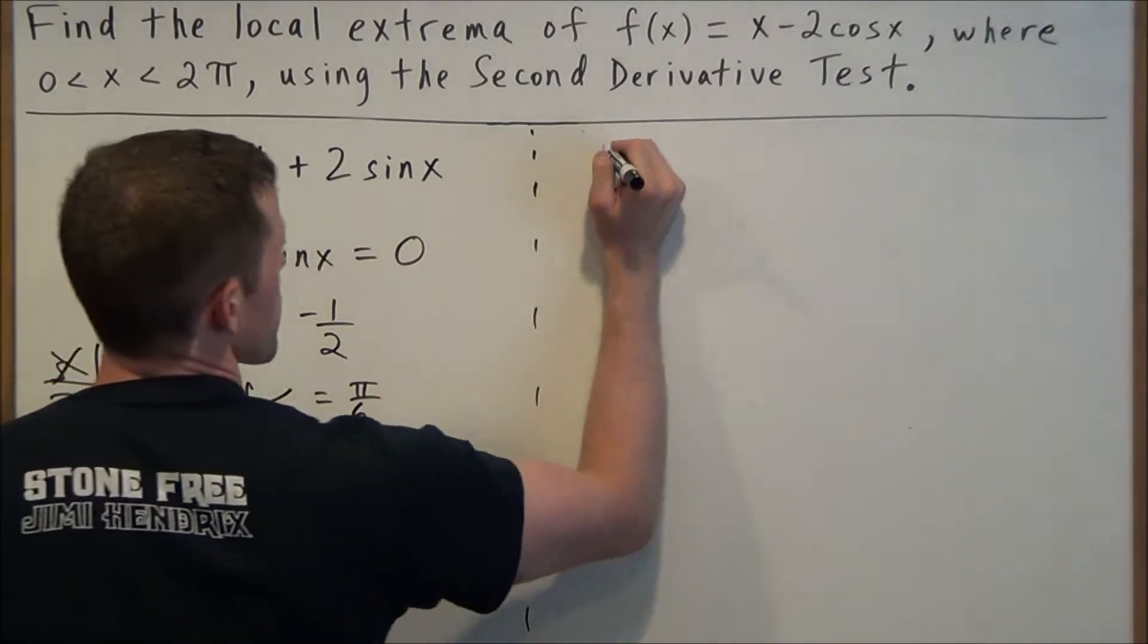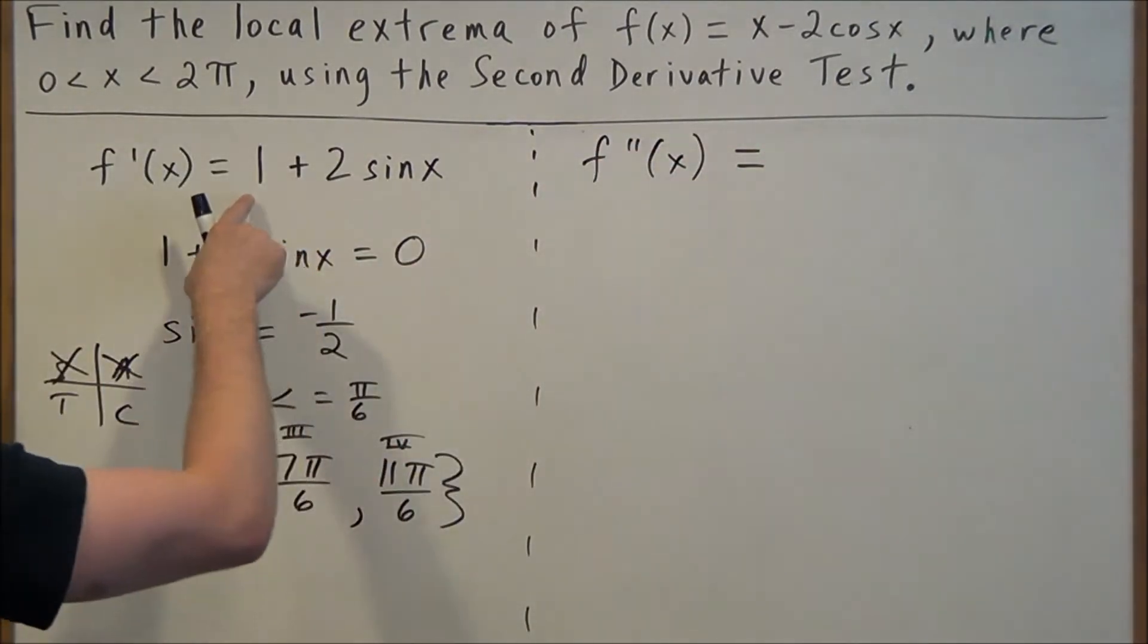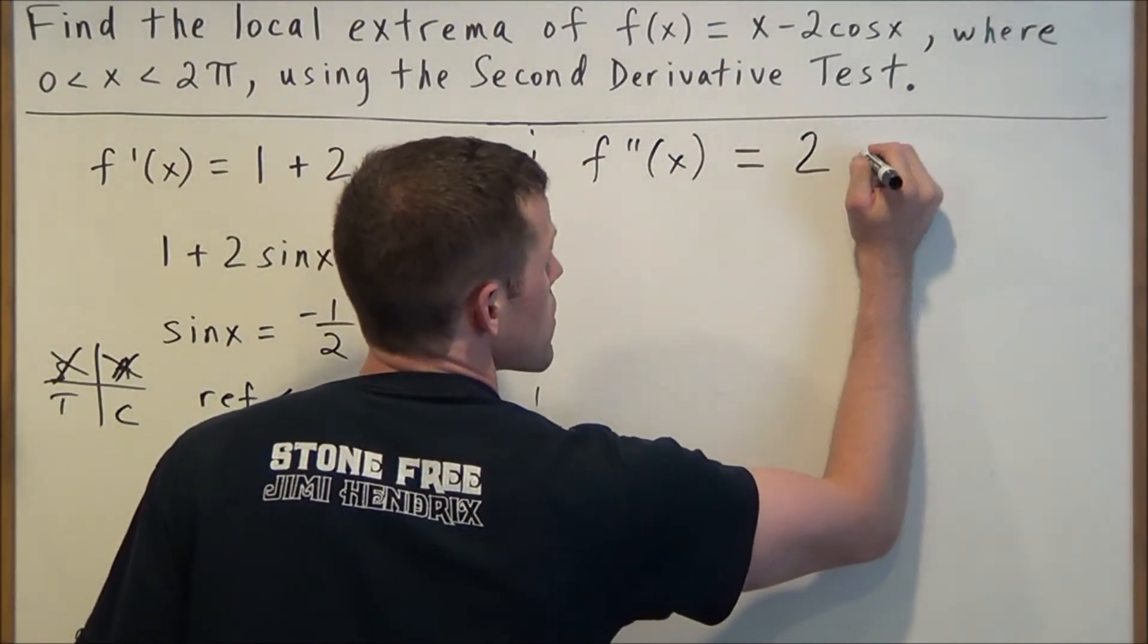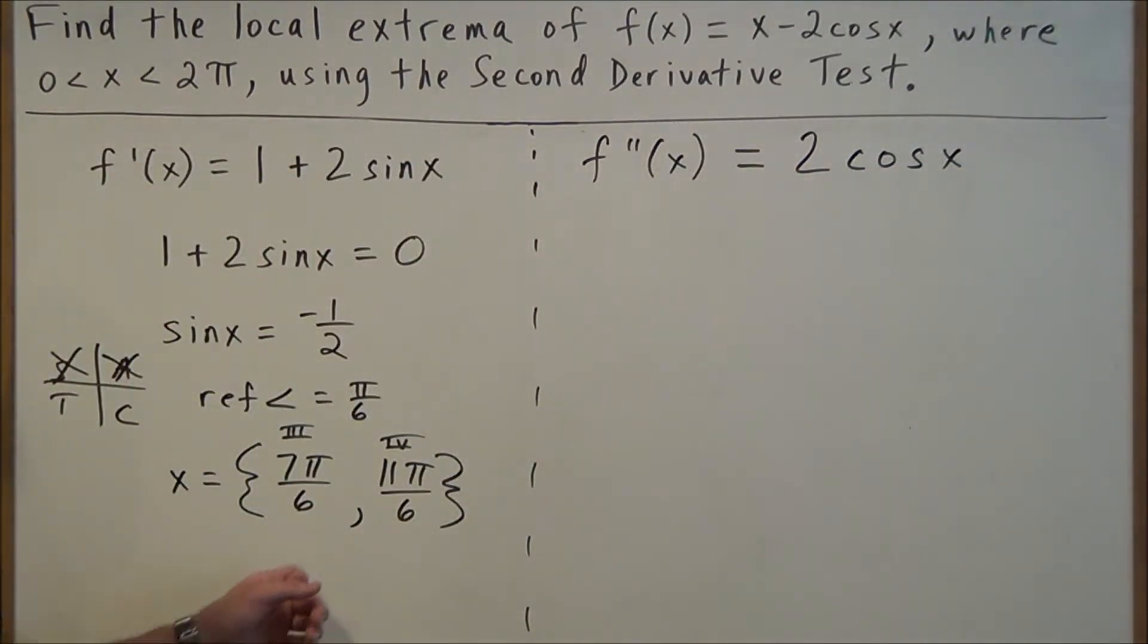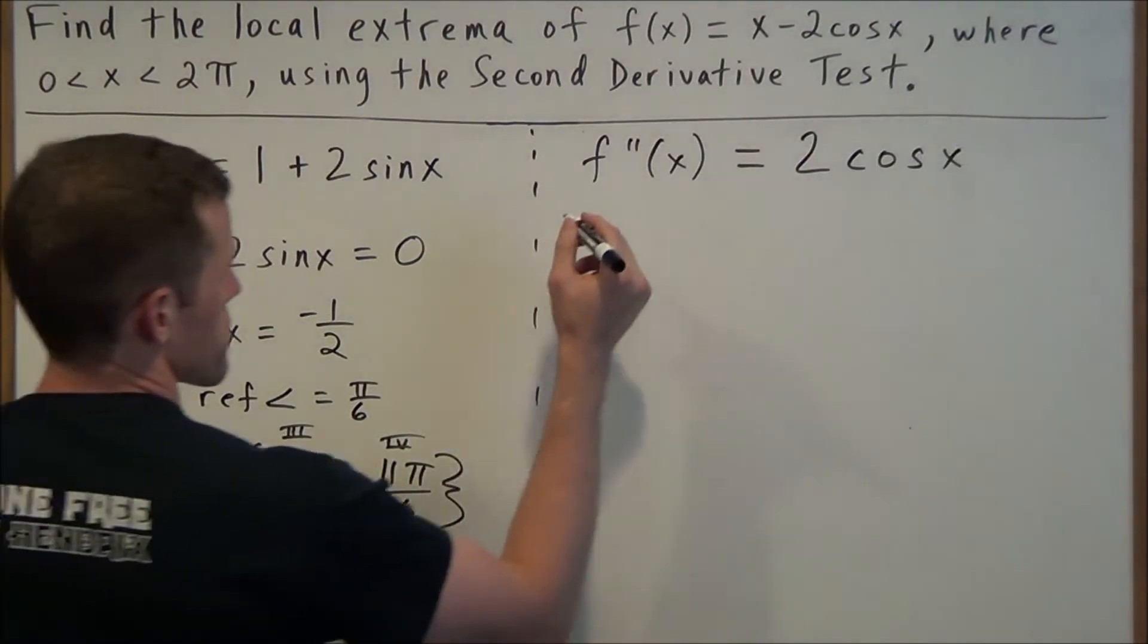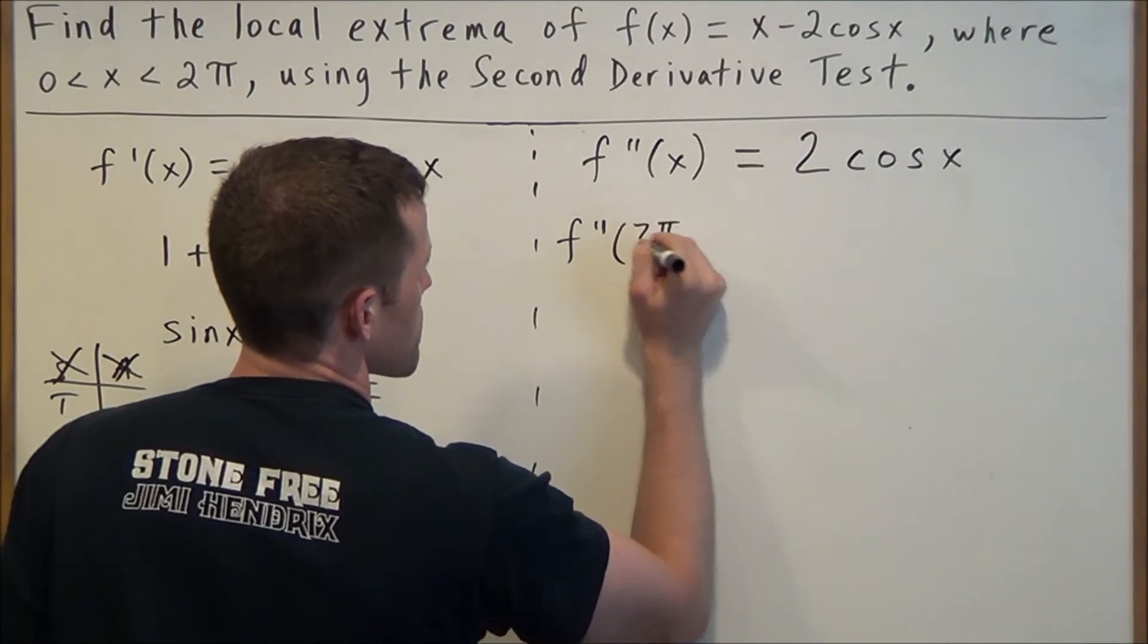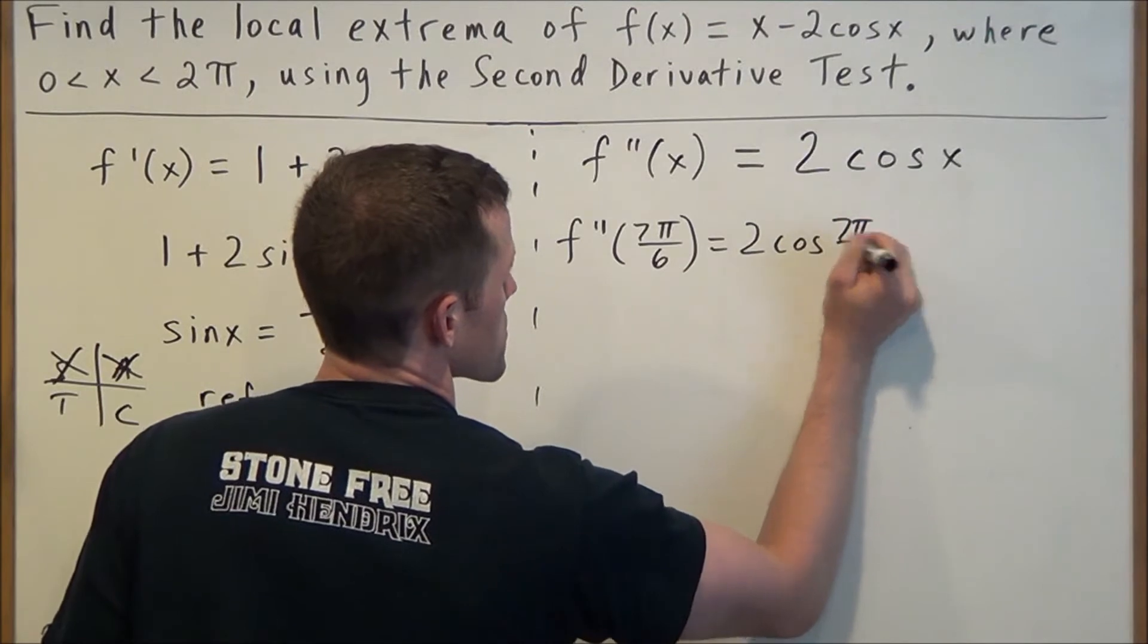So for this last part here, we have f''(x) equals, the derivative of 1 is 0, and the derivative of 2sin(x) is 2cos(x). To classify these values as either a local minimum or a maximum, we're going to plug in these critical values into our second derivative here. So first we'll start with 7π/6. We have f''(7π/6) = 2cos(7π/6).